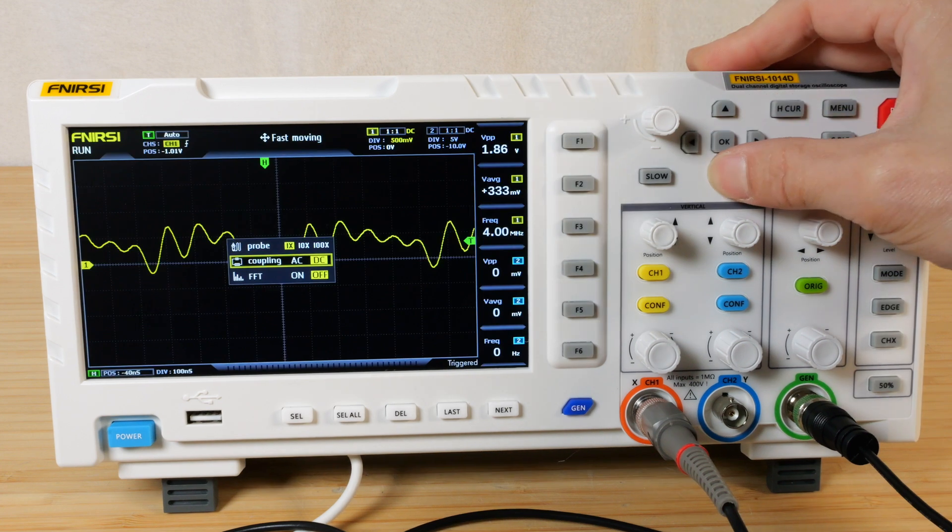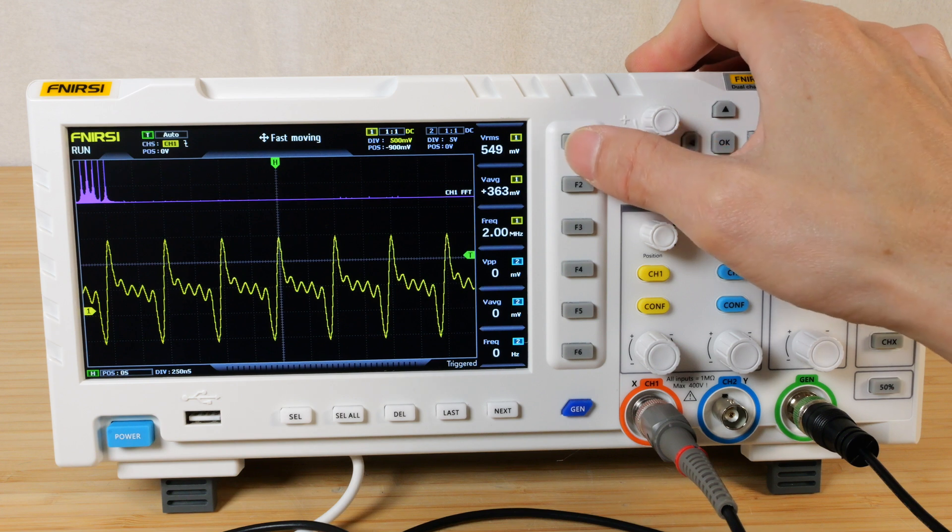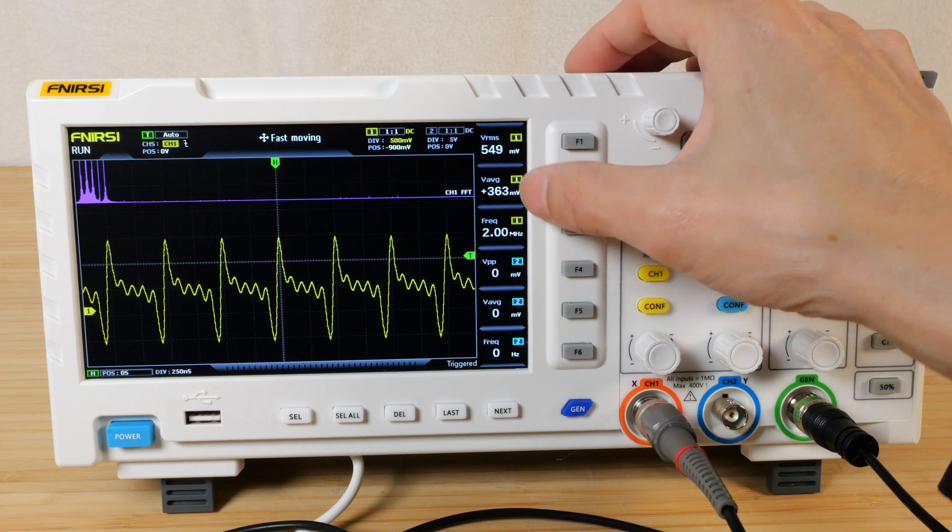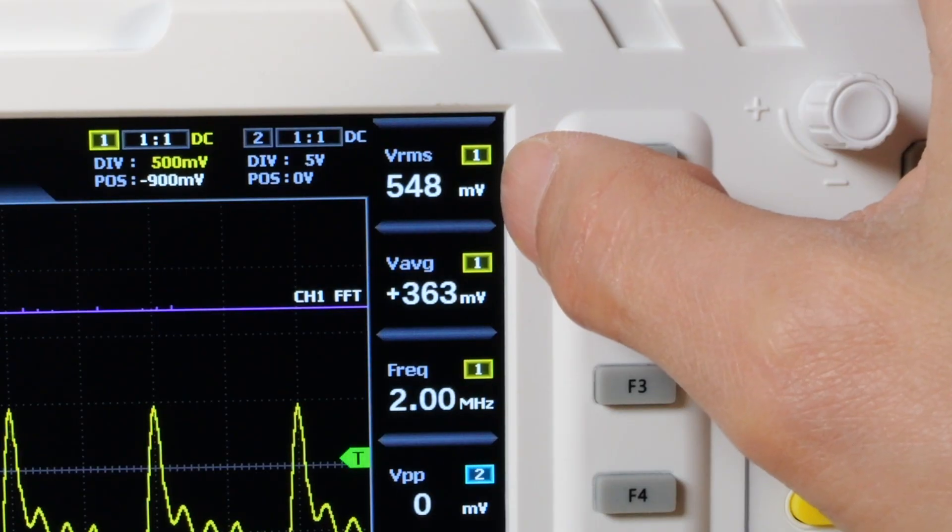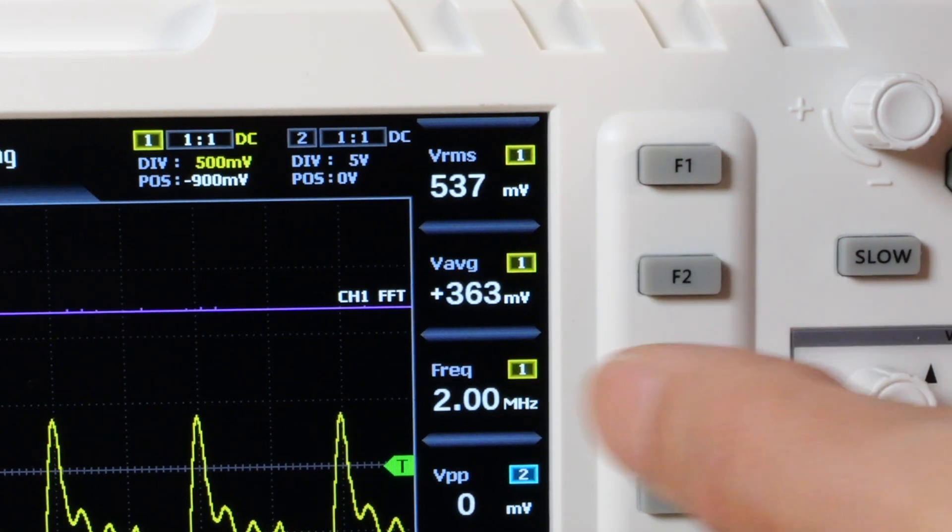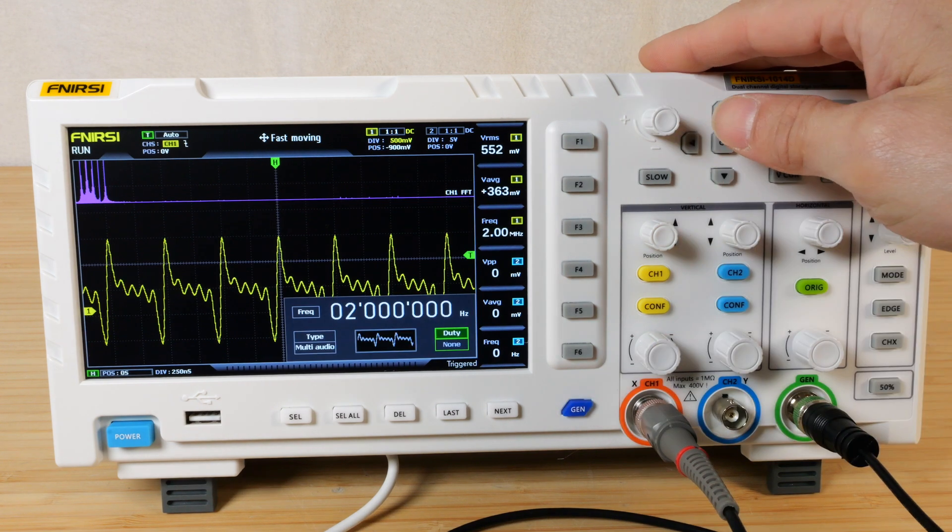The cool thing here is let's do FFT on. Look at that. The function buttons over here allow you to pick a metric that you want to display. So you get to pick six different metrics. Over here, it shows three of them already. The RMS voltage is 549 millivolts. Average voltage is 363. The frequency is 2 megahertz.